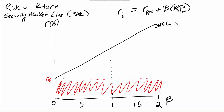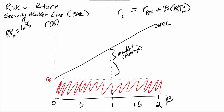We can trace this up to the security market line — that's what this line is up here. At beta of one, this is a market or average stock. Let's assume the market risk premium is equal to six percent. So at beta of one, our risk premium equals six percent. If we look at beta of 0.5, the risk premium is going to be 0.5 multiplied by six percent, which equals three percent.